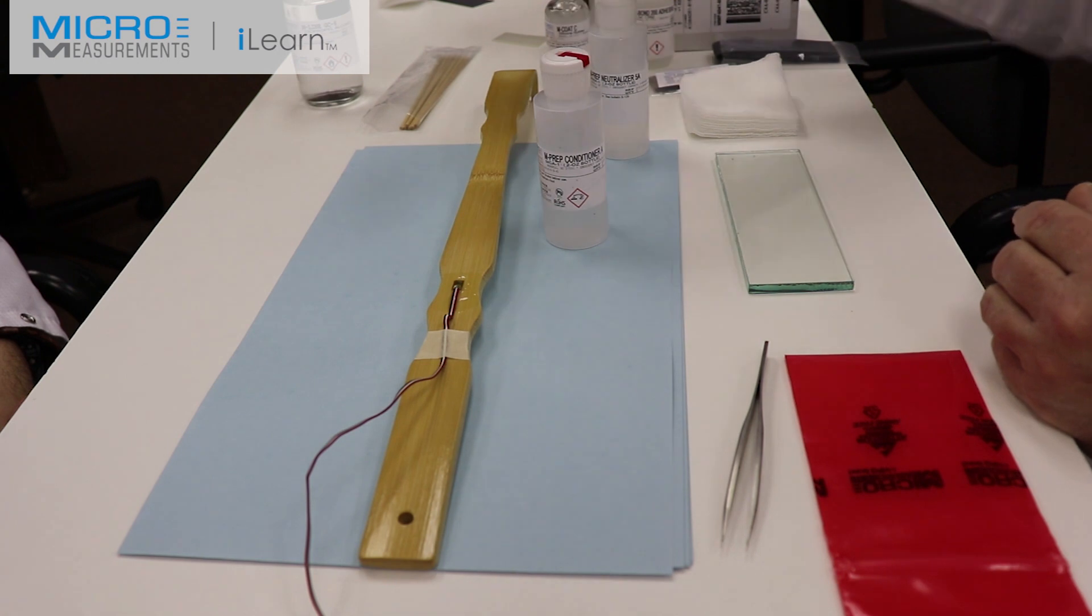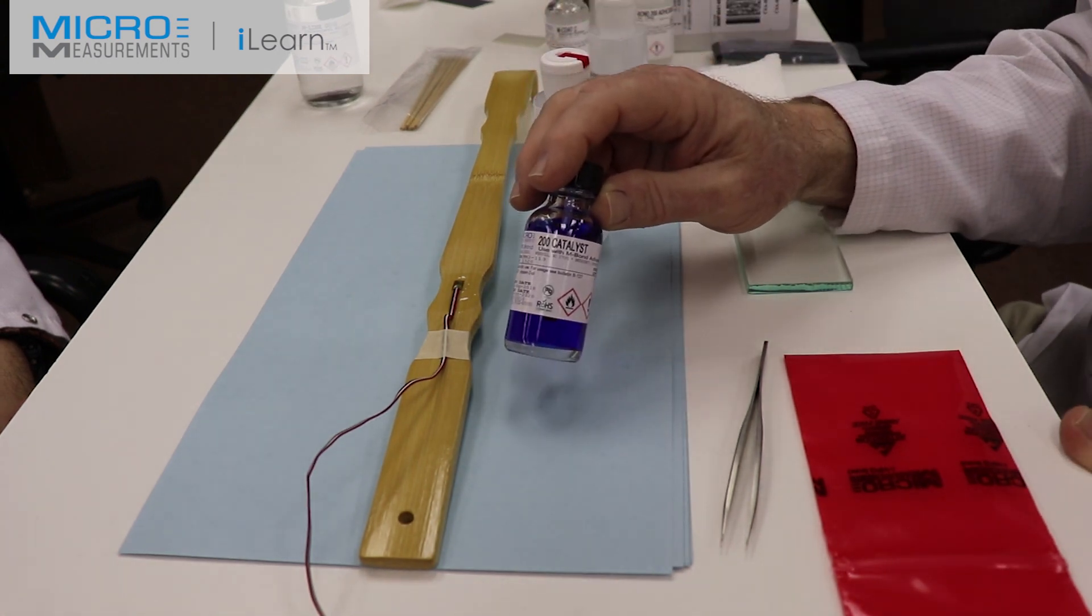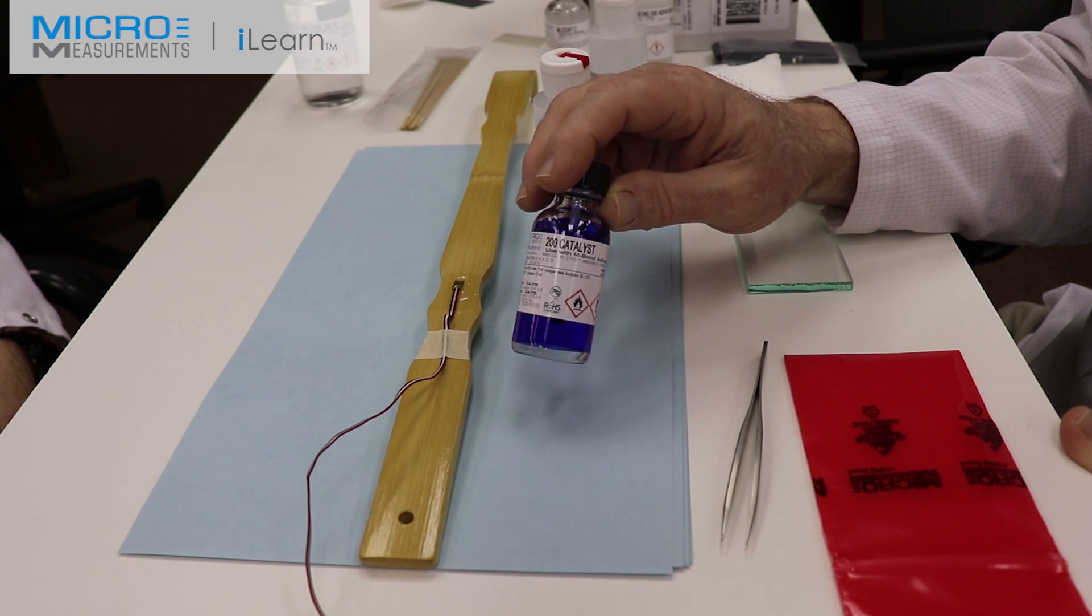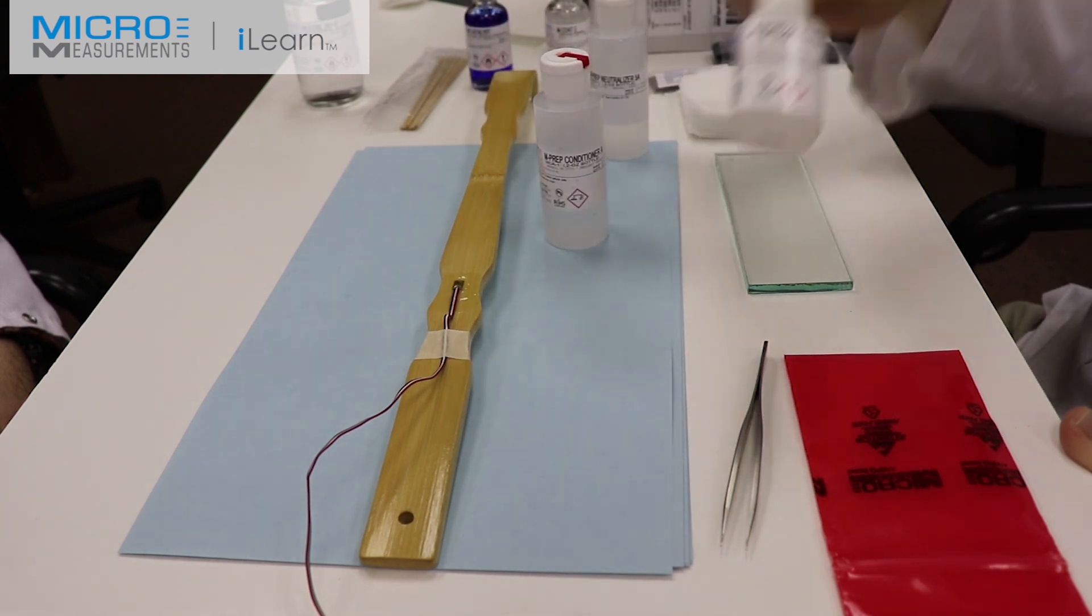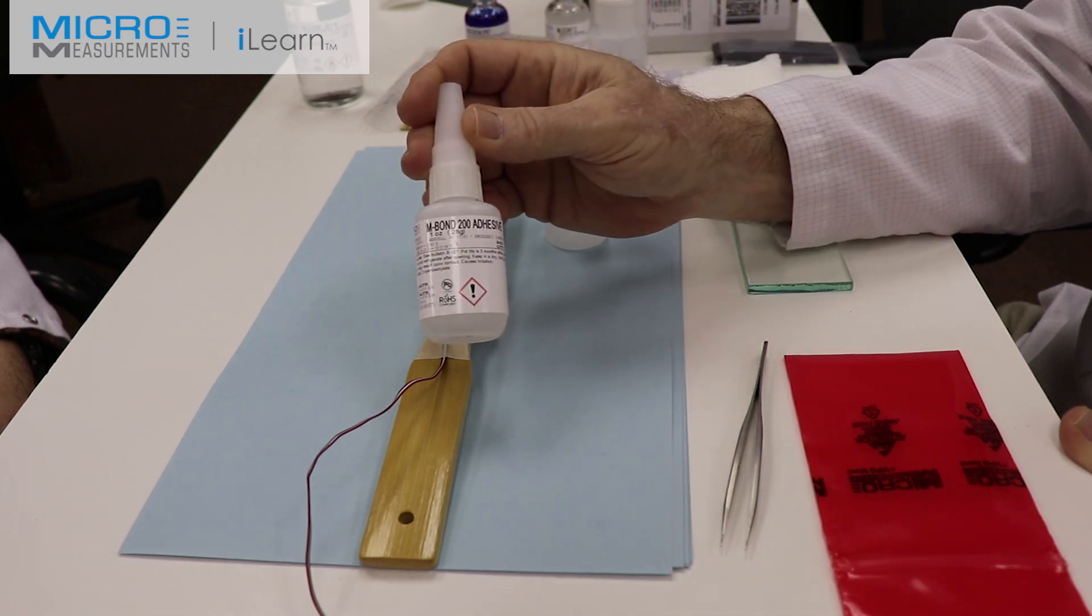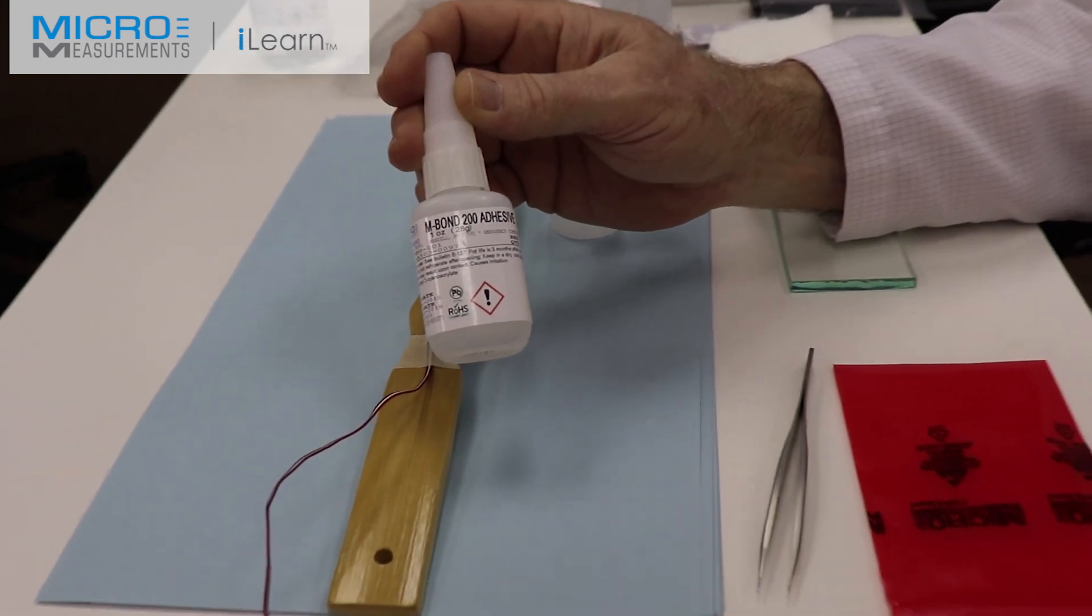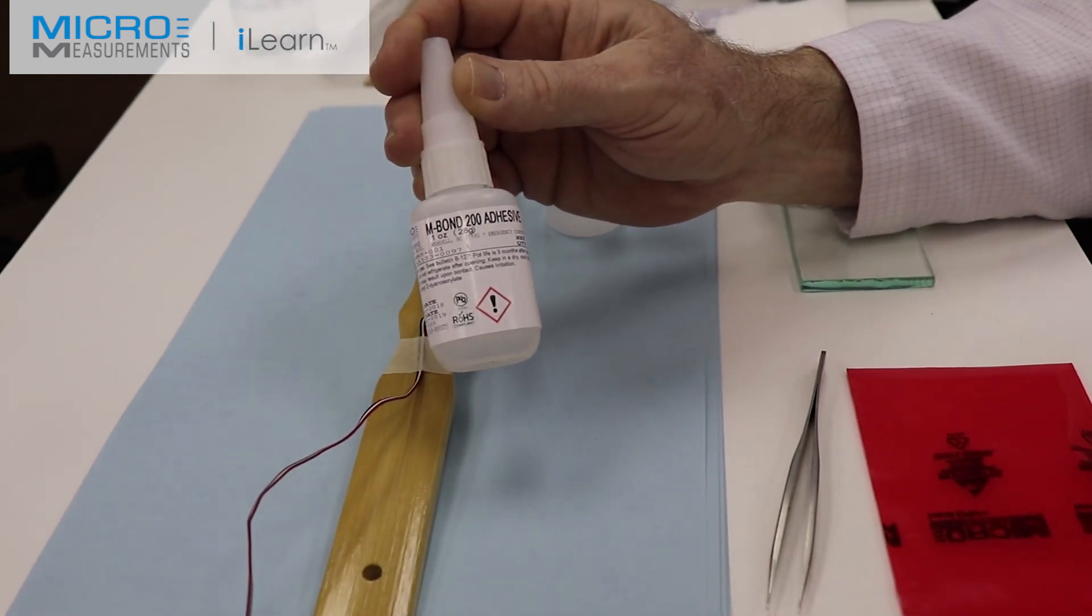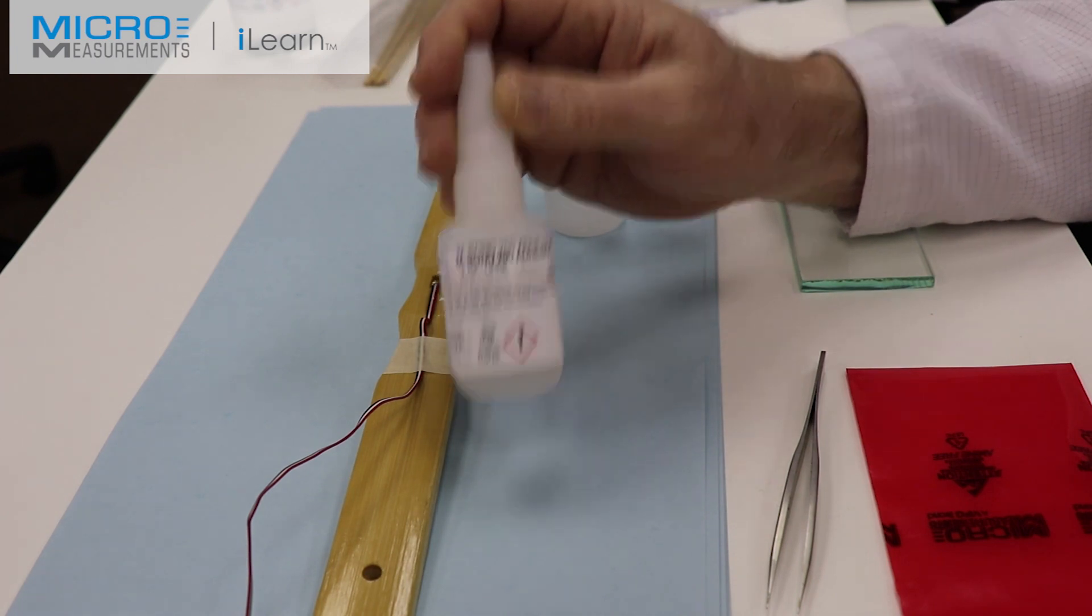The Catalyst-C, to call it a catalyst is really a misnomer, it's more of a controlling agent, was applied to the backing of the gauge and allowed to air dry for one full minute. Then the final step before bonding the gauge was the M-Bond 200, a cyanoacrylate adhesive, instant setting, fairly popular for general purpose stress analysis work.